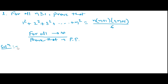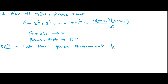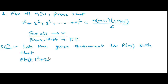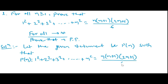Let's talk about the solution to this particular problem. First of all, we need to understand how we are going to approach this problem. We write: let the given statement be P(n) such that P(n) specifies 1² + 2² + 3² + ... + n² = n(n+1)(2n+1)/6.